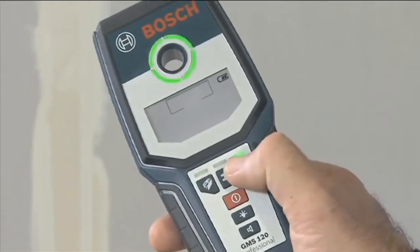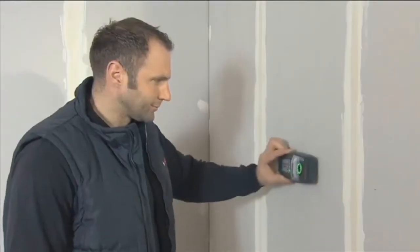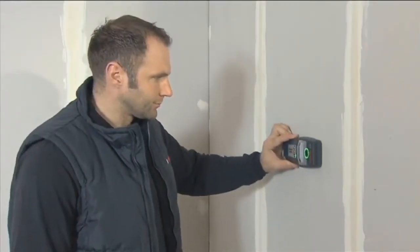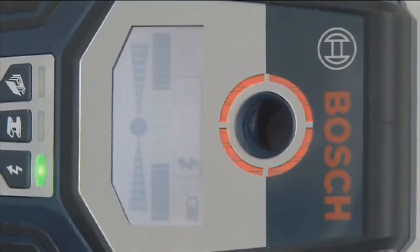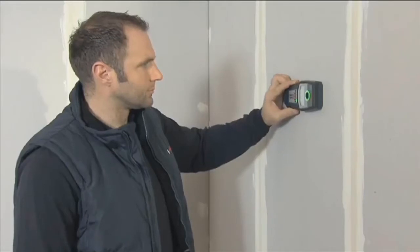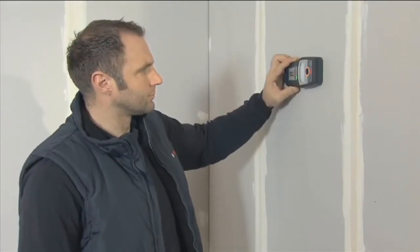In live wire mode, the GMS 120 Professional detects when it's moved very near to or directly over a live cable, warning you with a quickly repeating sound and a flashing red luminous ring. Live cables can be detected up to a depth of 5 cm.